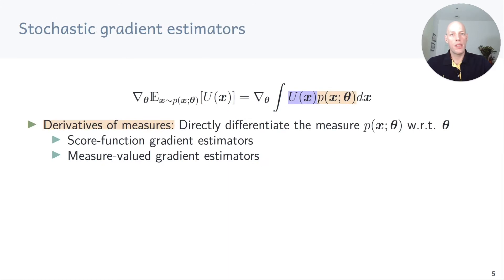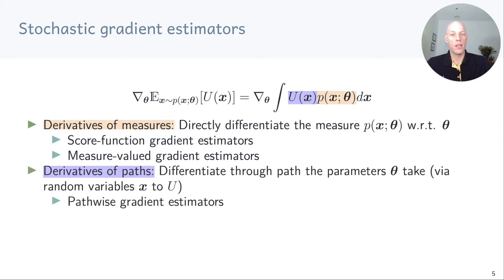The gradient of the expected utility is the gradient of the integral of the utility function u times p of x dx, where p has distributional parameters theta. There are basically two things we can do. We can compute derivatives of measures, which means we directly differentiate the measure p with respect to theta. This gives rise to two categories of gradient estimators: score function and measure-valued gradient estimators. Alternatively, we can compute derivatives of paths, where we differentiate through the path the parameters take from a latent variable via x to u. This gives rise to pathwise gradient estimators. Reparameterization gradients are an example of a pathwise gradient estimator.